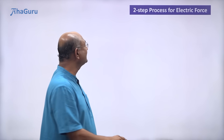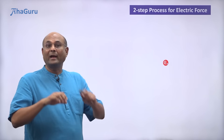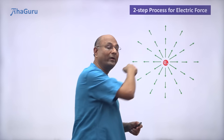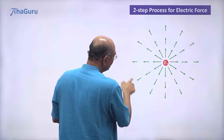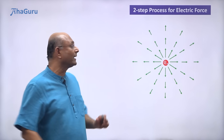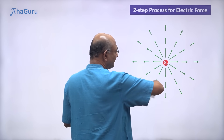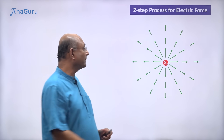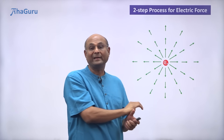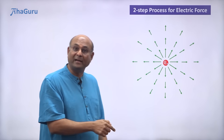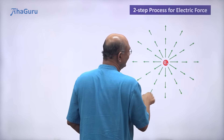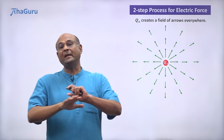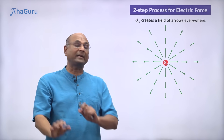Let us now look at Maxwell's two-step process for electric force. I have a charge Q naught, and this Q naught produces arrows all around it in space, including in three dimensions, going into the board. What about areas where I have not drawn the arrows? They are still there — you have to imagine arrows everywhere. Any location you pick, there is an arrow. Notice the arrows are obviously in different directions, and also, here the arrows are bigger; as you go out, the arrows are smaller. The arrows can be different magnitudes and different directions. Each of these arrows is called the electric field at that location.